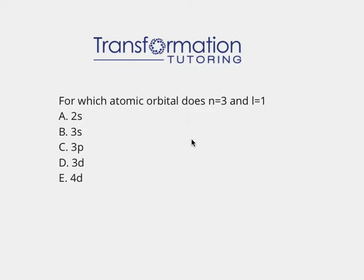For which atomic orbital does n equal 3 and l equal 1? n and l are two of the four quantum numbers that represent an electron. n is related to the energy of the electron, and l is related to the shape of the orbital where the electron is located.